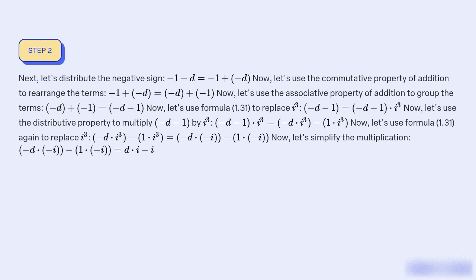Now let's use the commutative property of addition to rearrange the terms: −1 + (−d) equals −d + (−1). Then, using the associative property of addition to group the terms: −d + (−1) equals −d − 1.